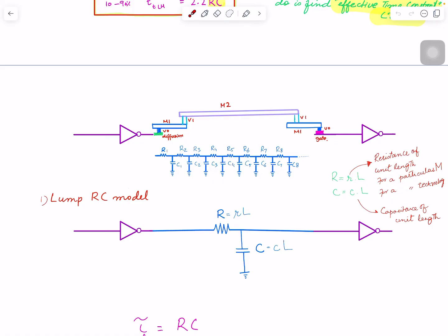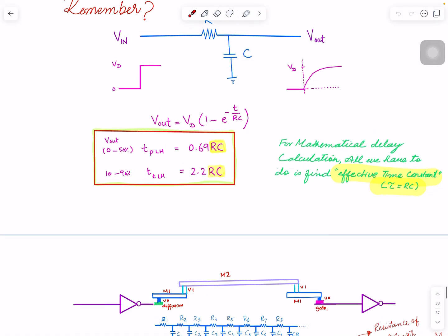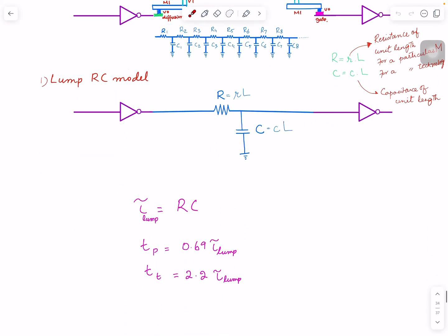Simple model, right? The time constant - as I said from this equation all we have to know is the time constant and we multiply with 0.69 to get the delay and 2.2 to get the transition time. So time constant of the lumped model is R times C. You multiply R and C together and you multiply these numbers and you get the delay and transition time.